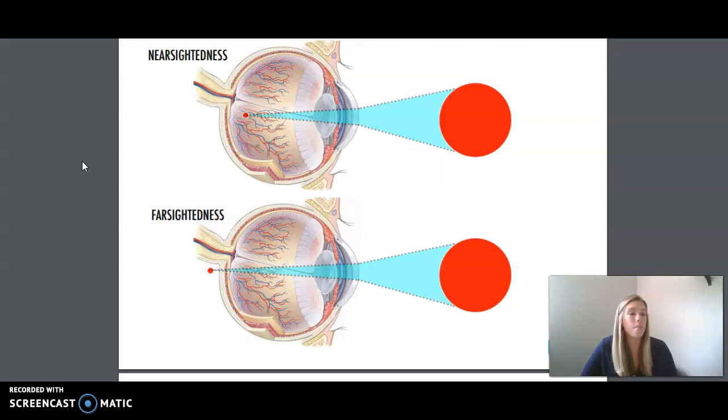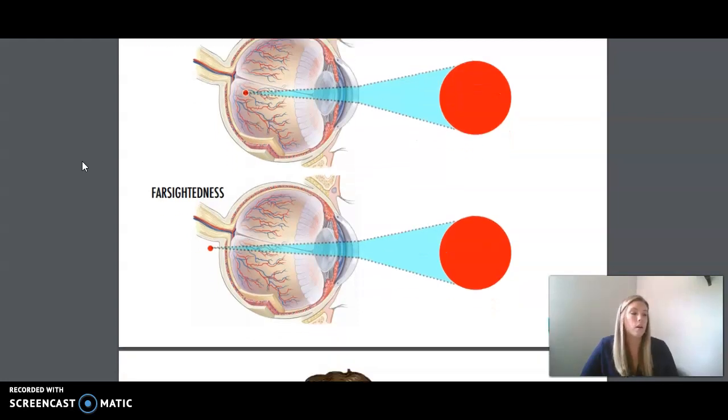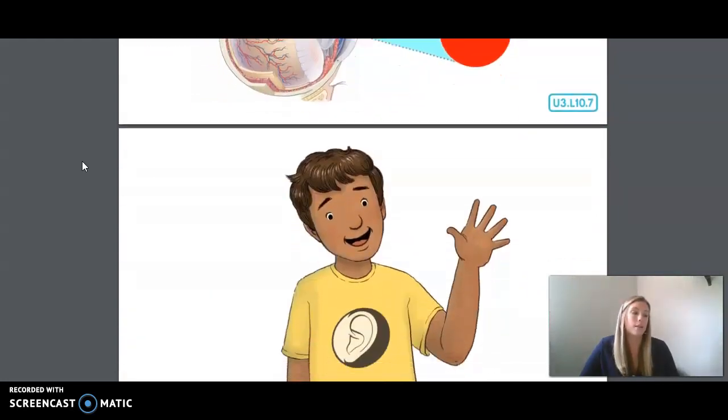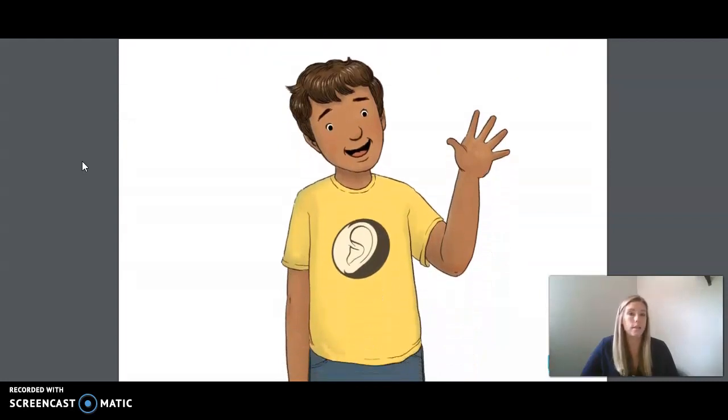In farsightedness, the eyeball size affects the focusing power of the lens, so images are projected or focused behind the retina. Distant objects are seen clearly, but nearby objects are out of focus. Luckily, these problems can both be corrected with glasses or contact lenses.